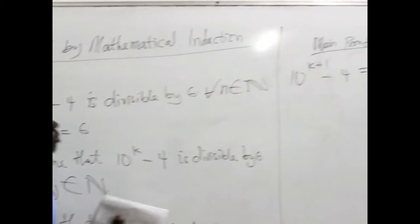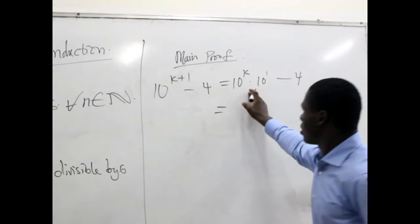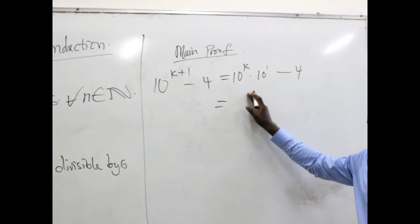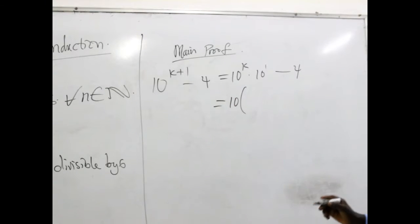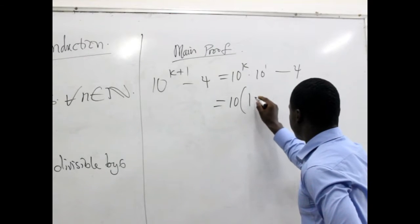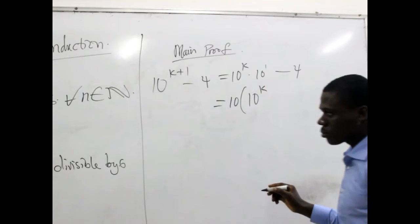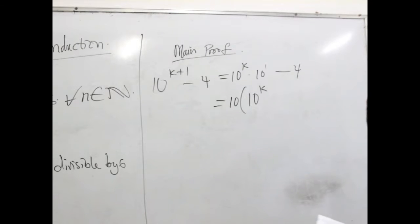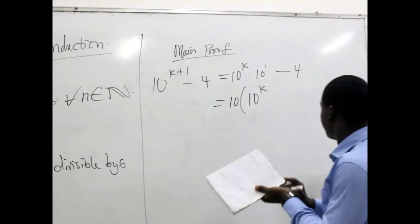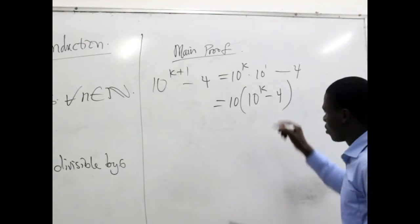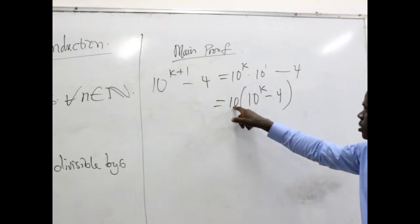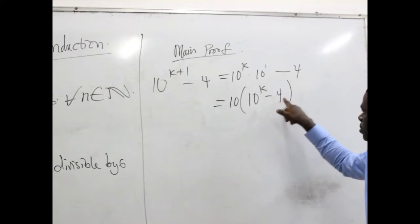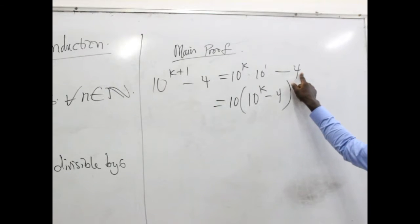So our effort will lead us into saying, let's factor 10 out. Even though 10 is not common, we can put 10 out. When that is done, we will be left with 10 to the power k, but because we are interested in using the assumption, we will pretend and put here negative 4.